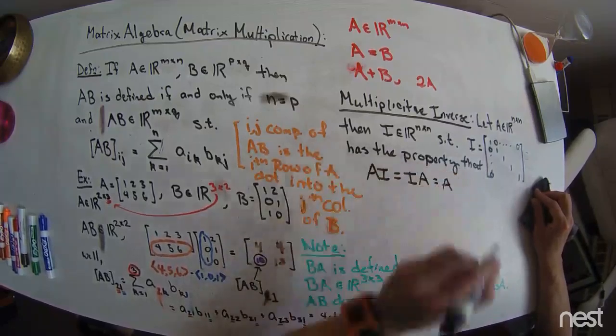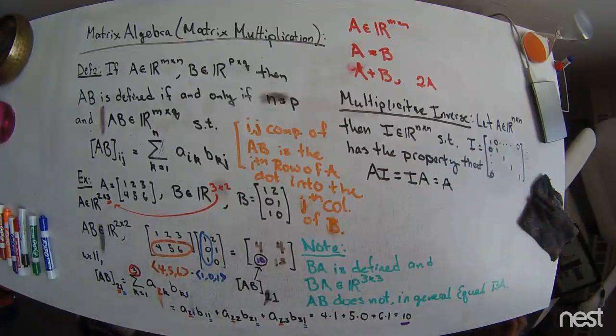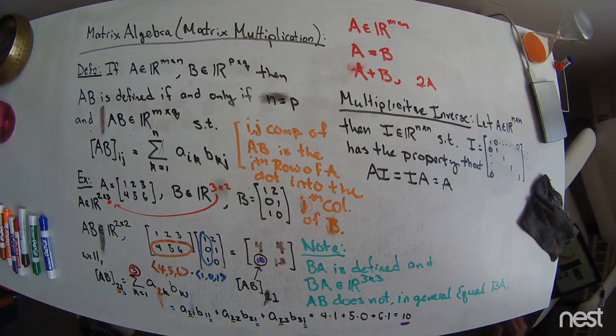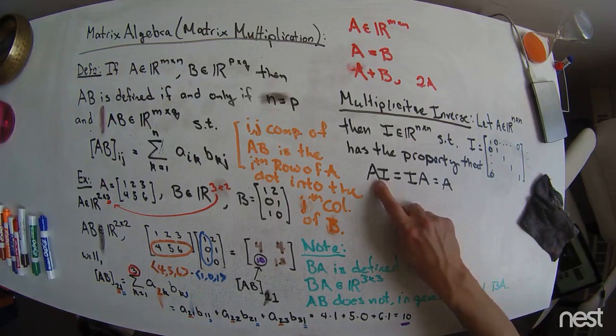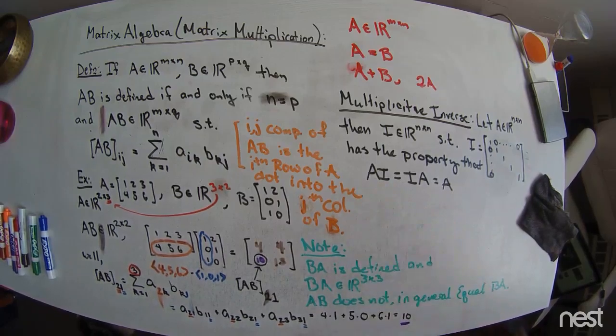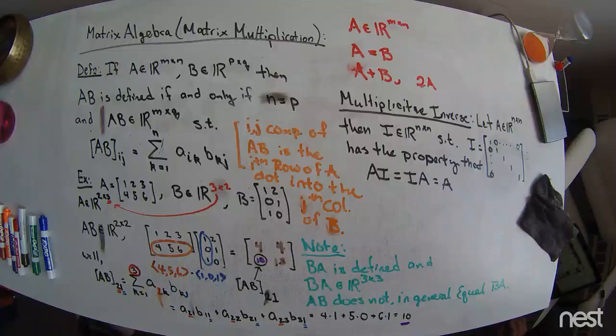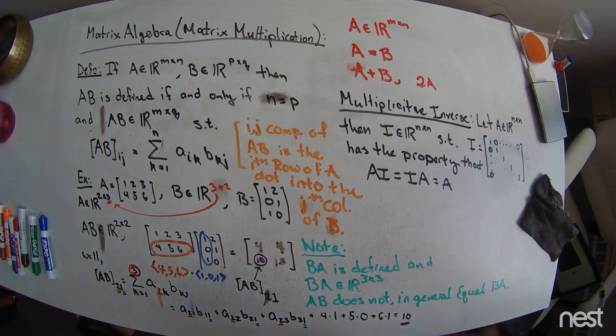We would find that this has the property that A times I is equal to I times A, which is just equal to A. So this matrix does nothing to problems. I times A will give you the same thing as A times I, and that is the A matrix, which is left unchanged. So that is the multiplicative inverse. It acts like the number 1.